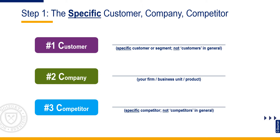Three circles refers to three stakeholders: the customer, the company, and the competitor. Specificity is paramount. Step 1: Identify the focal customer or customer segment. For the framework to be actionable, it needs to be a specific customer or customer segment.